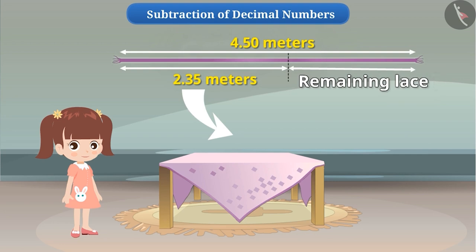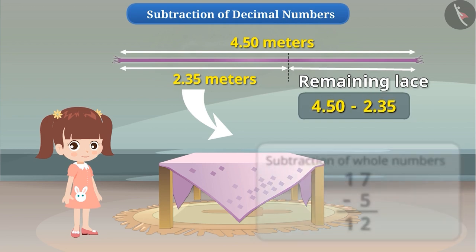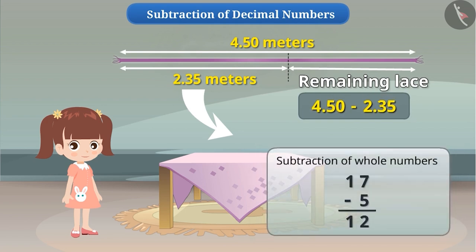In order to find the length of the remaining lace, we need to subtract these two decimal numbers. However, the subtraction of decimal numbers is done in the same way as we do subtraction of whole numbers. But while subtracting decimal numbers, it is necessary to take care of a few things related to the subtraction of these numbers. In this video, let us learn an interesting way to perform the subtraction of decimal numbers.